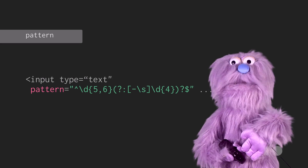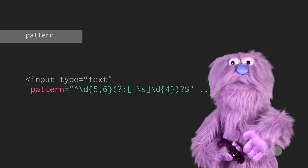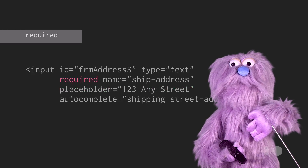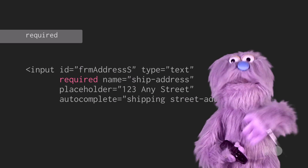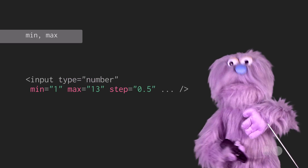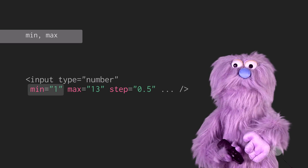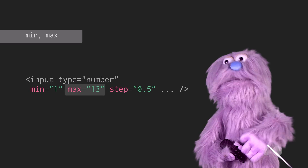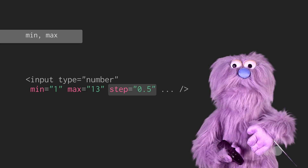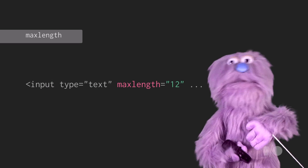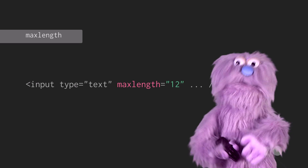There are several attributes that you can use to provide monster-side validation. The pattern attribute specifies a regular expression used to validate an input field. If the required attribute is present, then the field must contain a value before the form can be submitted. For numeric input types, like numbers, ranges, dates, and times, you can specify the minimum and maximum values, as well as how much they should each increment or decrement, as they're adjusted by the sliders or spinners. The maxlength attribute can be used to specify the maximum input length, and is useful when you want to limit the length of information provided by the monster.